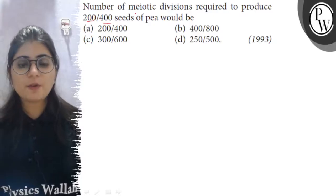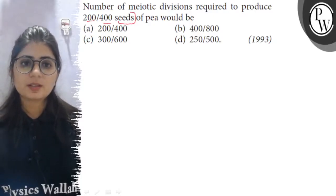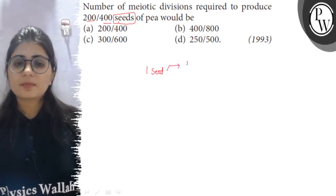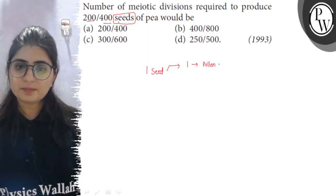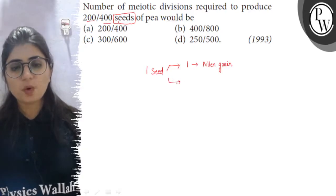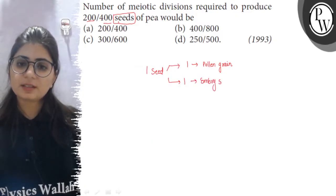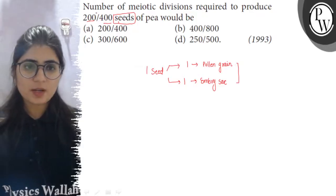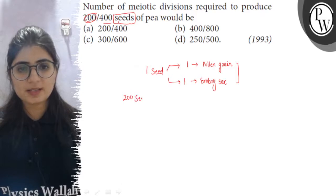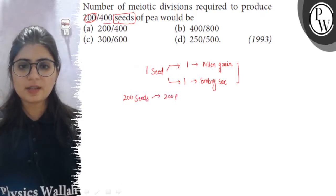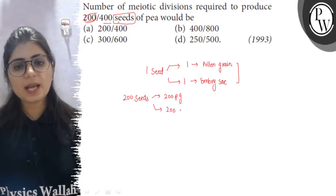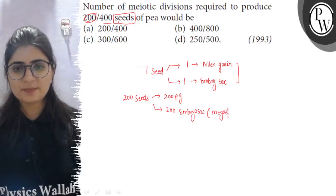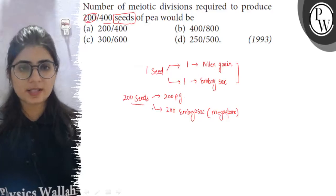Let's see how to solve this. To produce one seed, one pollen grain and one embryo sac (or egg) is required. So, if we have to produce 200 seeds, there will be a requirement of 200 pollen grains and 200 female gametophytes (embryo sacs). The embryo sac is derived from the megaspore, so 200 megaspores will be required to produce 200 seeds.